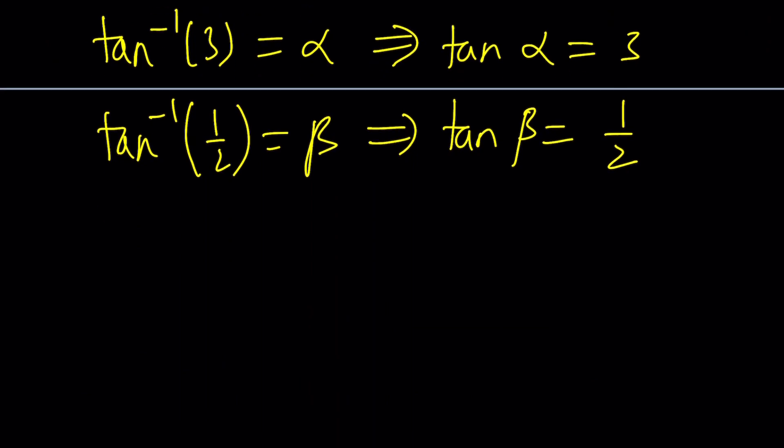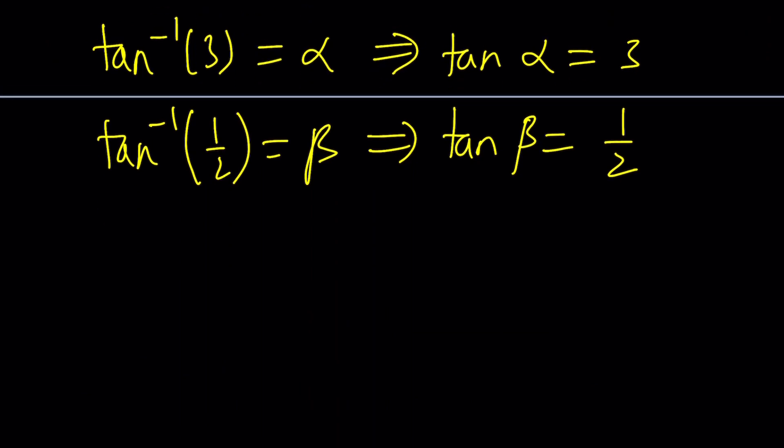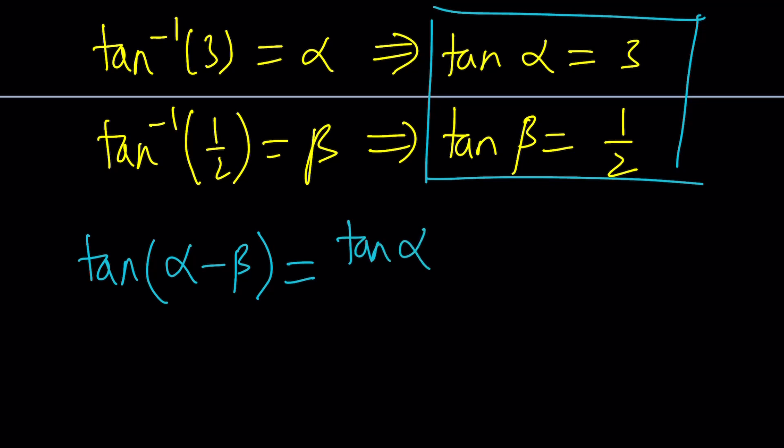Since I have tangent alpha and tangent beta, and I'm looking for alpha minus beta, I'm going to go ahead and tangent alpha minus beta. So by using the difference formulas, right, we can write this as tangent alpha minus tangent beta divided by 1 plus tangent alpha times tangent beta.